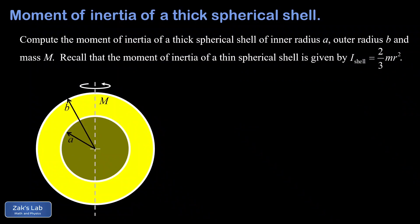In this video we're computing the moment of inertia of a thick spherical shell with inner radius a, outer radius b, and a mass of capital M. We're reminded that we can use the moment of inertia of a thin spherical shell, which is given by two-thirds mr squared. A link to the video where that was derived will be posted.